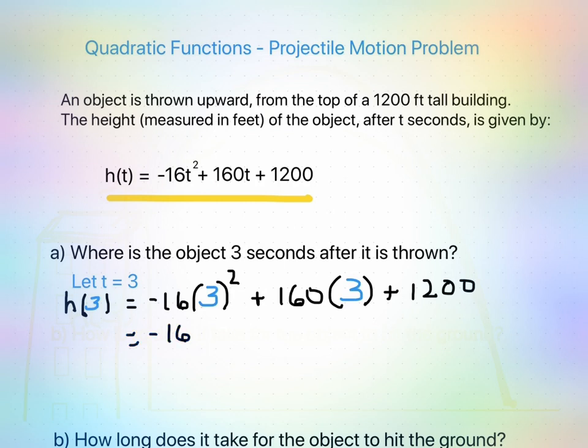If we do that, we'll go ahead and find 3 squared first. So negative 16 times 9, and then plus 160 times 3, 480 plus 1,200. I think the rest you can do yourself. So remember, you'll do this first, negative 16 times 9, and we'll add everything up. What do we get in the end?